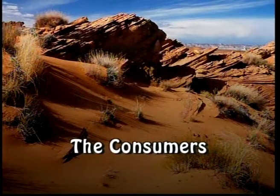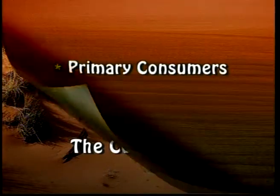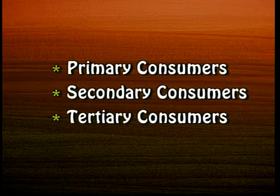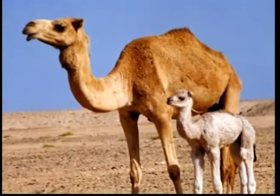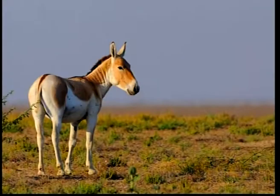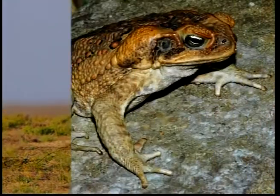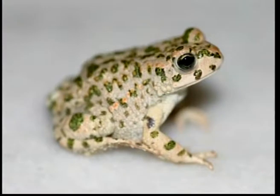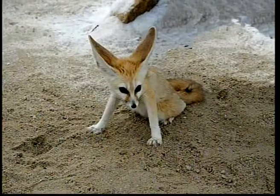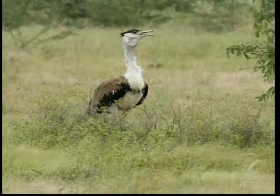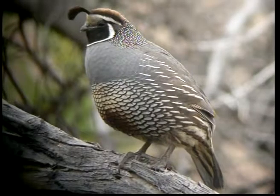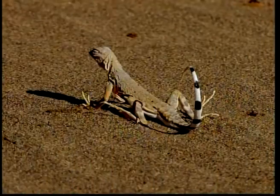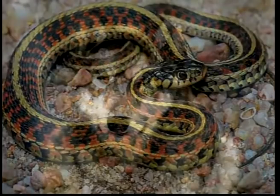The Consumers are of different categories such as Primary, Secondary and Tertiary Consumers. The Primary Consumers or herbivores are camels, sheep and wild ass. Secondary Consumers are goats, frogs, desert cats, desert fox and birds like wheatear, Indian bustard, flinthen and quail. Tertiary Consumers are desert snake, eagle, etc.